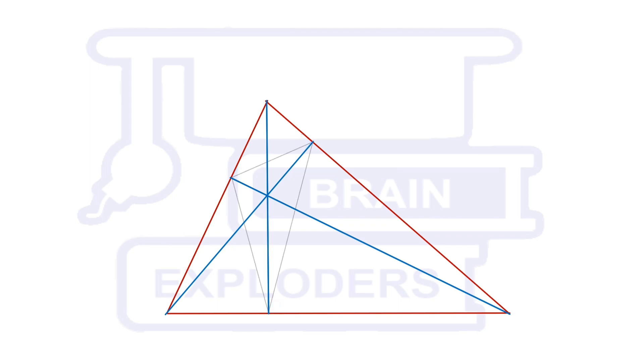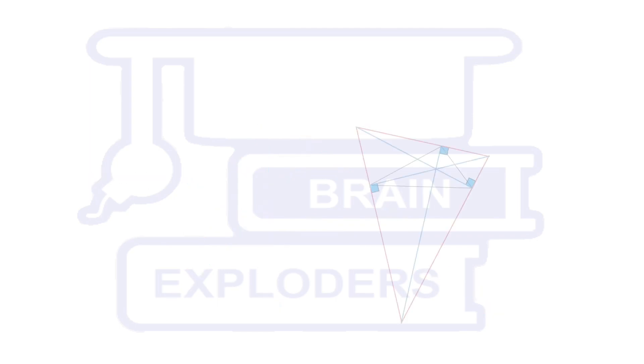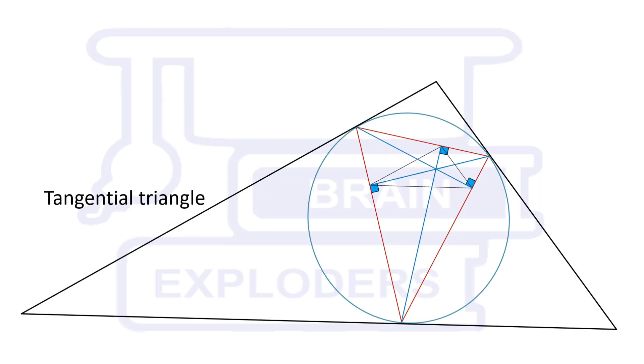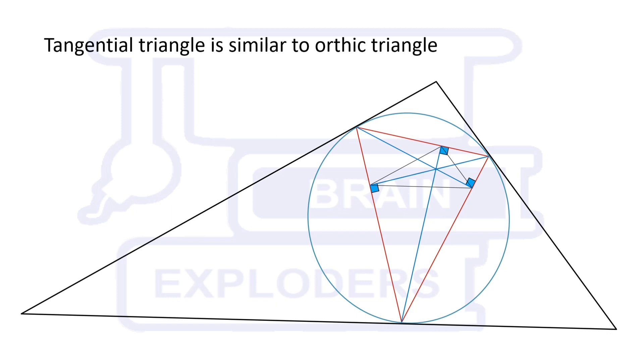The triangle formed by the foot of perpendiculars is called the orthic triangle of the given triangle, and the triangle formed by the tangents of the circumcircle on the vertices of the given triangle is called the tangential triangle. The nice thing about these triangles is that both are similar.